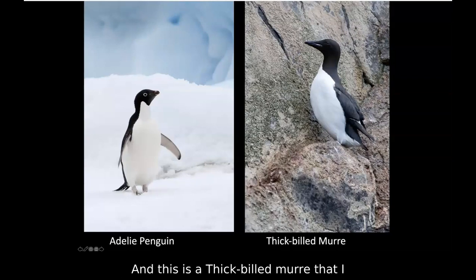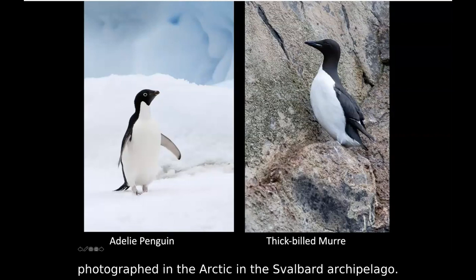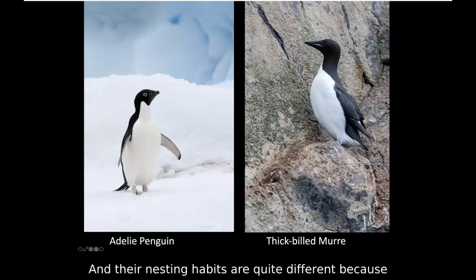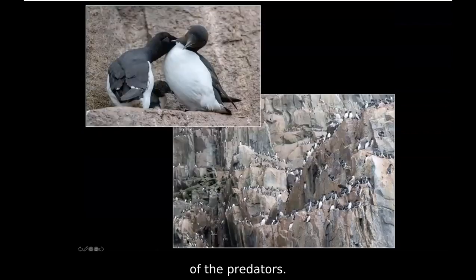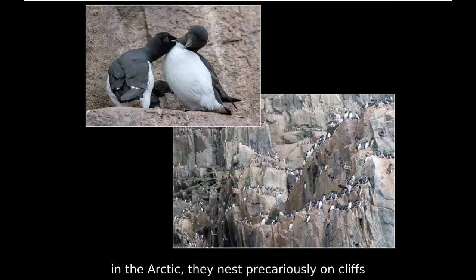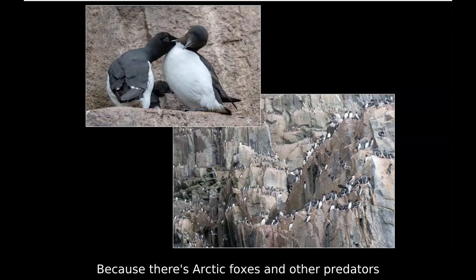This is a thick-billed murre that I photographed in the Arctic in the Svalbard archipelago. Although they look quite similar, they're not closely related — they're in different families, and their nesting habits are quite different because of the predators. The thick-billed murres in Svalbard, typical for seabirds in the Arctic, nest precariously on cliffs to get away from predators, because there are Arctic foxes and other predators that will take the chicks and eggs.